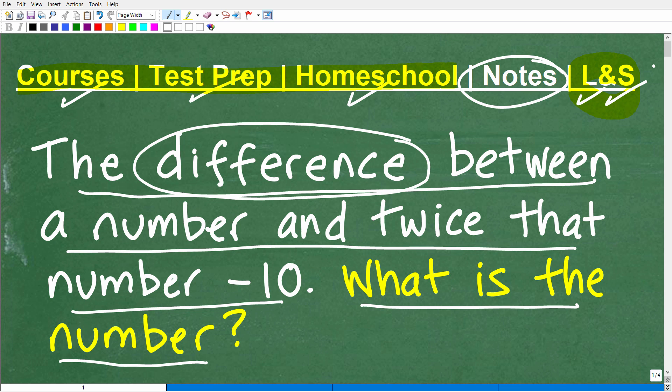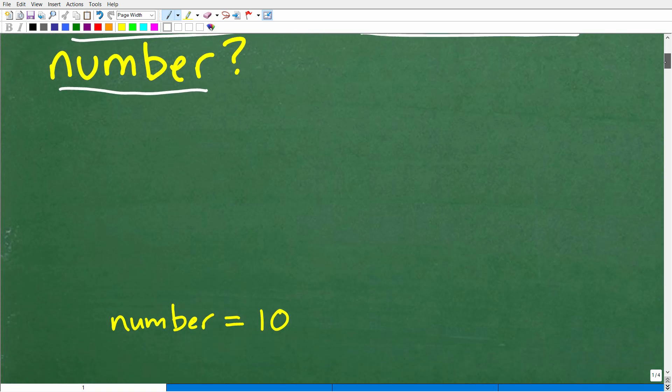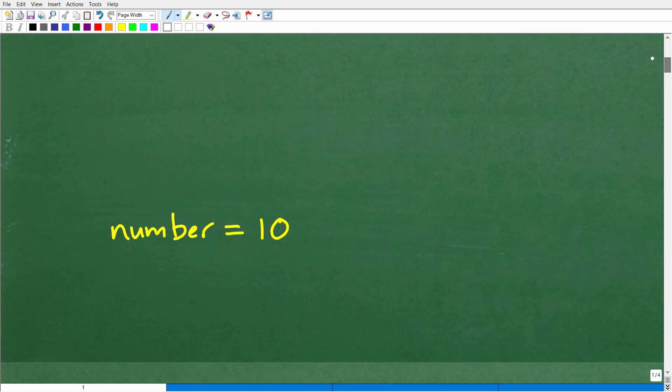Okay, so let's go ahead and take a look at the answer to this question. The difference between a number and twice that number is negative 10. What is the number? Let's go ahead and take a look at the answer right now. The number is 10.